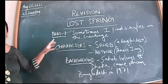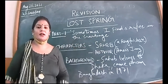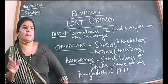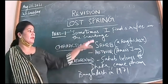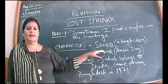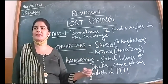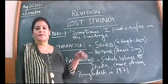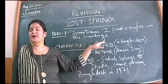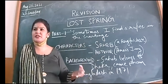Part one's name is 'Sometimes I Find a Rupee in the Garbage.' The main character and protagonist is Sahib, a rag picker who scrounges garbage dumps, and if he finds anything valuable he keeps it. The title reflects that sometimes, by sheer chance, he finds a rupee in the garbage — otherwise he never does.